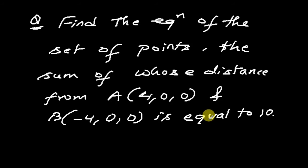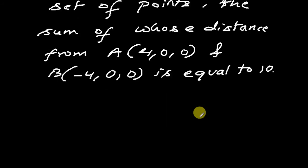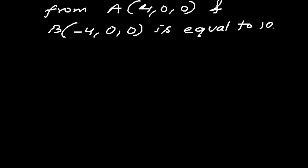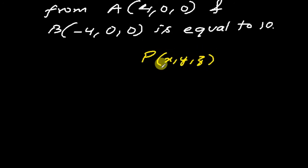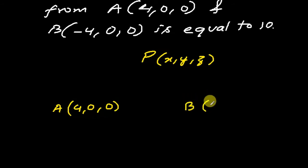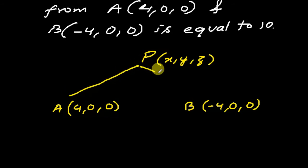So here we can rewrite the question: find the equation of the set of points the sum of whose distance from A(4, 0, 0) and B(-4, 0, 0) is equal to 10. That means suppose the point we want to find is P with coordinates (x, y, z), A is given as (4, 0, 0) and B is (-4, 0, 0), and AP + PB = 10.